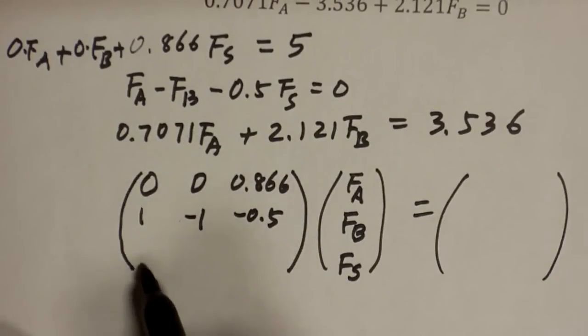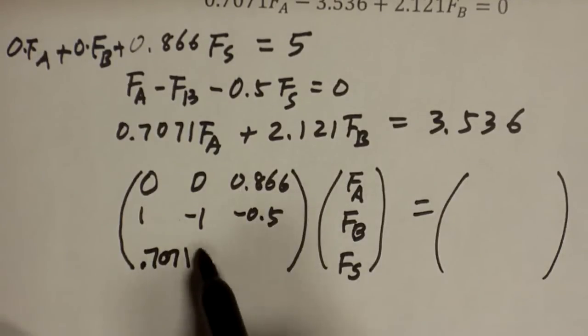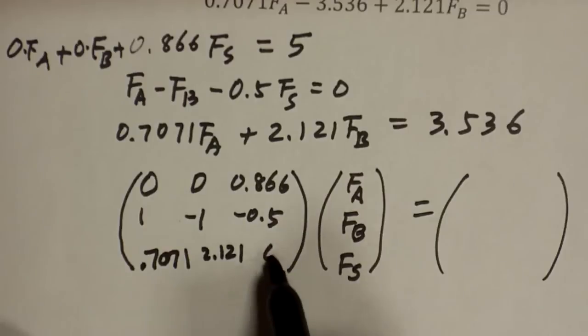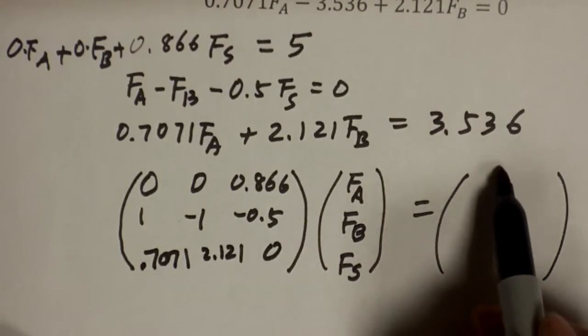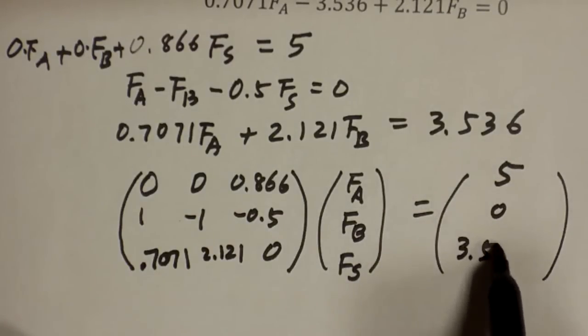The third line is 0.7071, 2.121, and then 0. And on the right side, you have the numbers 5, 0, 3.536.